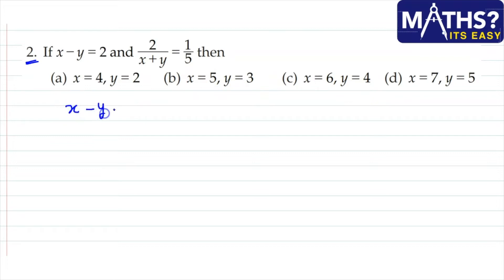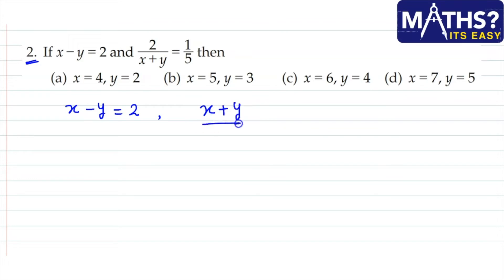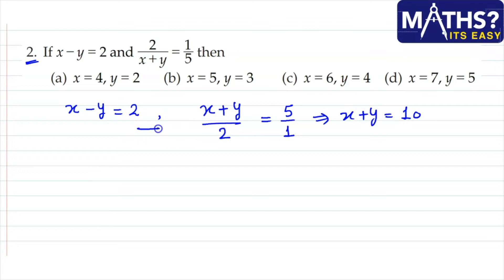Now let's look at the second question and explain the elimination method. The first equation is x - y = 2 and the other equation is x + y = 10. In the elimination method, we eliminate any one variable. In question 1 we studied the substitution method; in question 2 we use the elimination method.